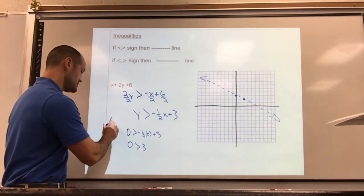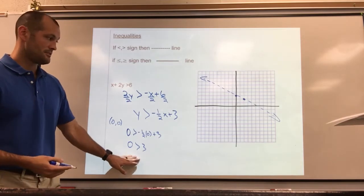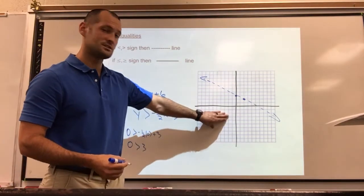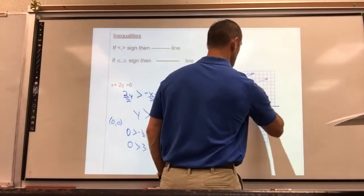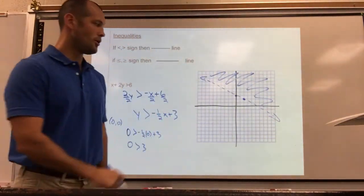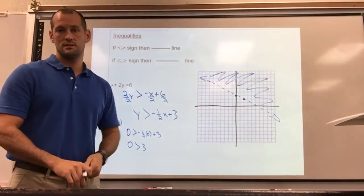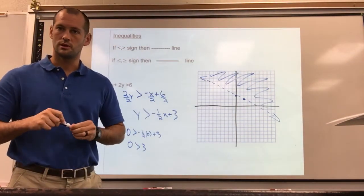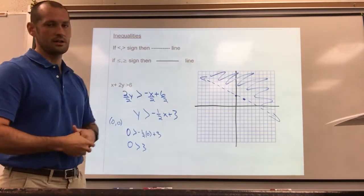Notice I chose the point zero, zero and it gave me a false statement. If the side I pick is false, it means the other side gets the shading. So whether you pick a point and test it, or you remember that greater than is above and less than is below, there's your answer, plain and simple. That's one example of how to graph a linear inequality.